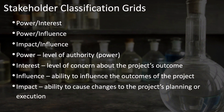Another common classification technique is the stakeholder classification grid, which comes in several forms — the power-interest grid, the power-influence grid, and the impact-influence grid. These grids show two axes and measure the stakeholder's level of power, influence, or interest, and map them accordingly. Power is the level of authority or official power within the organization. Interest is the level of concern about the project's outcomes. Influence is the ability to influence project outcomes, while impact is the ability to cause changes to how the project is planned or executed.